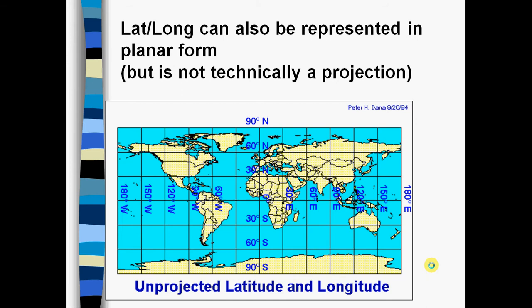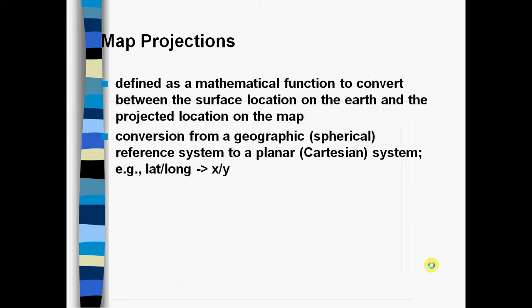Latitude-longitude is sometimes represented on a screen or map as a rectangular grid or planar representation. This is not actually a projection. To show unprojected latitude and longitude coordinates on a flat map is not a projection, just a rectangular representation of coordinates.